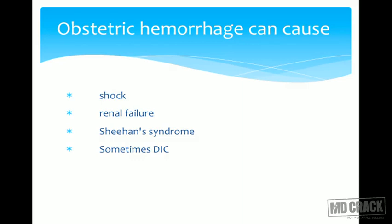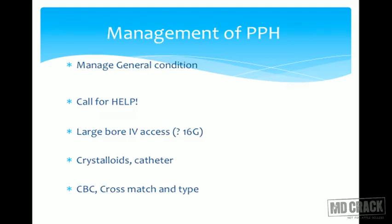Obstetric haemorrhage can lead to shock, renal failure, and Sheehan syndrome, where anterior pituitary necrosis leads to lactation failure and secondary amenorrhoea. IUD may lead to PPH because of DIC. It can also sometimes lead to DIC itself.